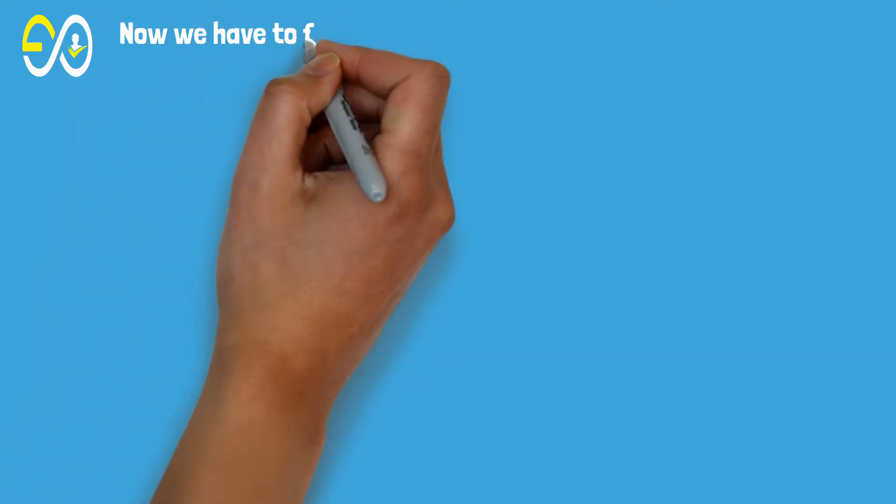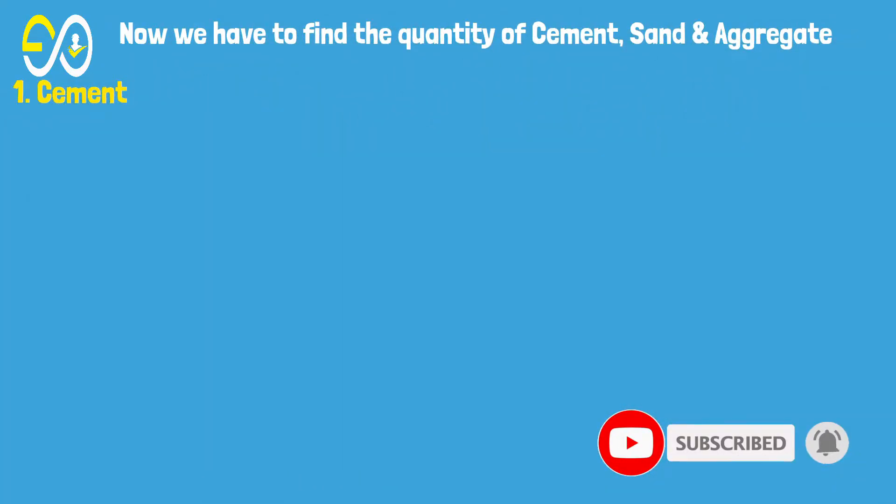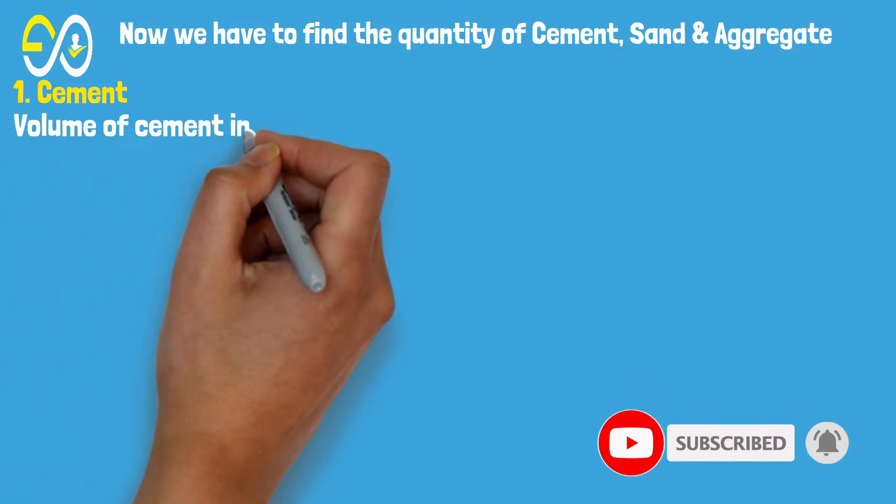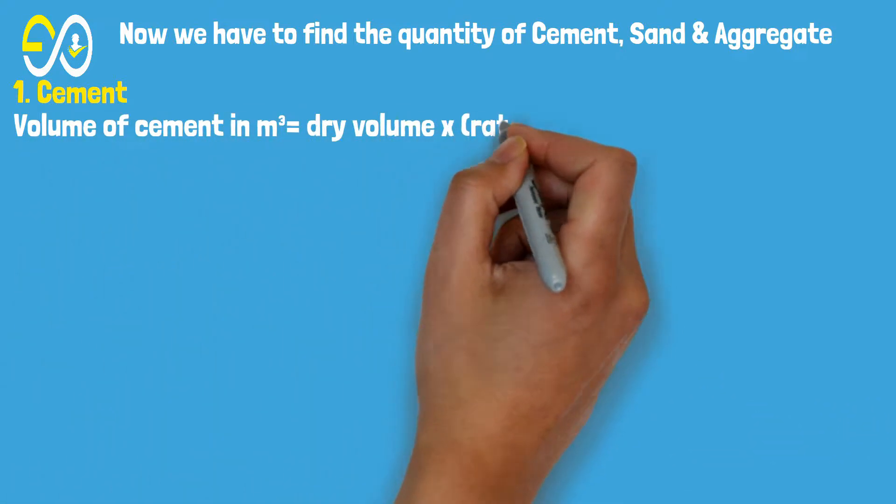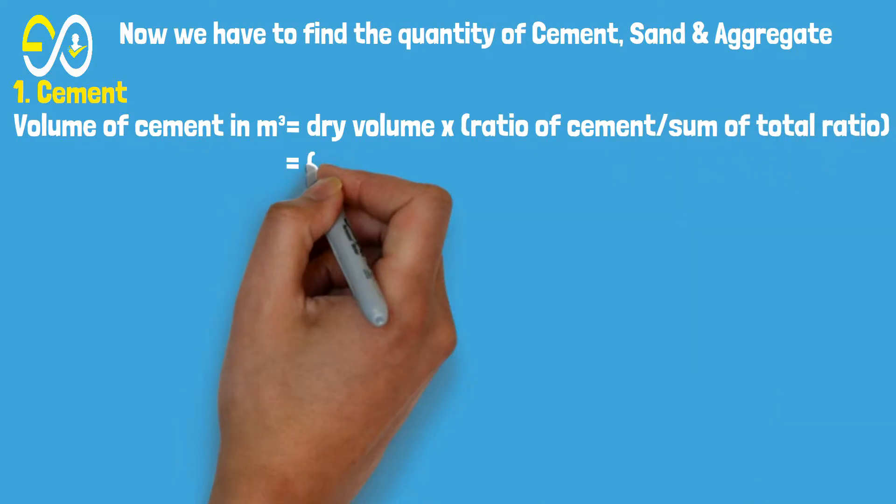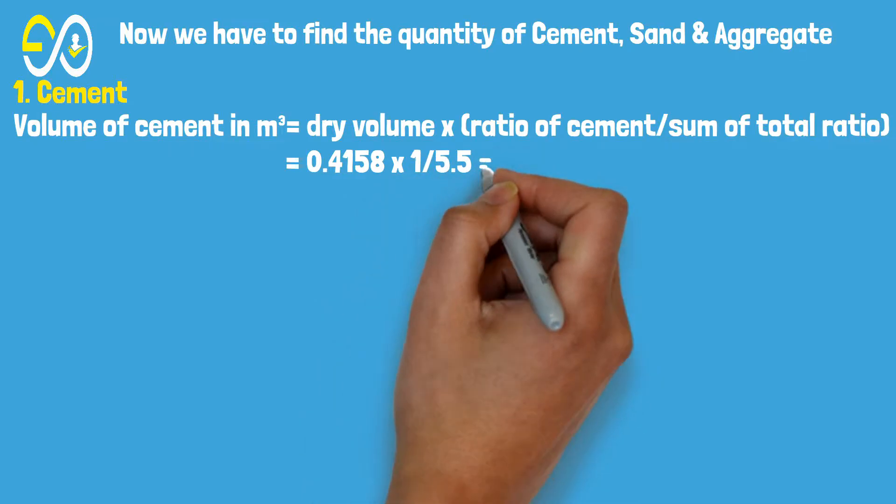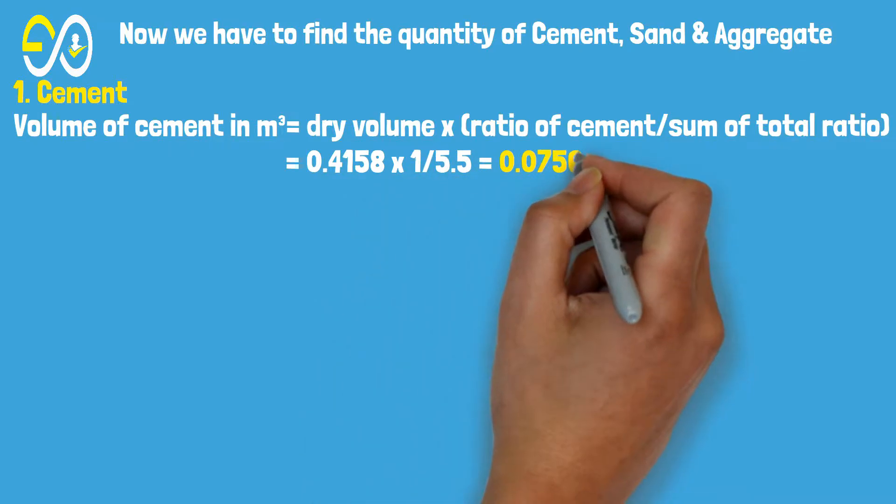Now we have to find the quantity of cement, sand, and aggregate. Volume of cement in cubic meters equals dry volume multiplied by the ratio of cement divided by the sum of total ratio. This equals 0.4158 times 1 over 5.5, which equals 0.0756 cubic meters.